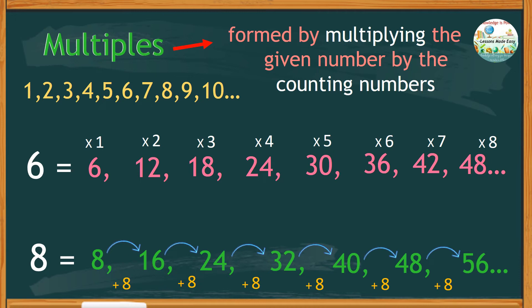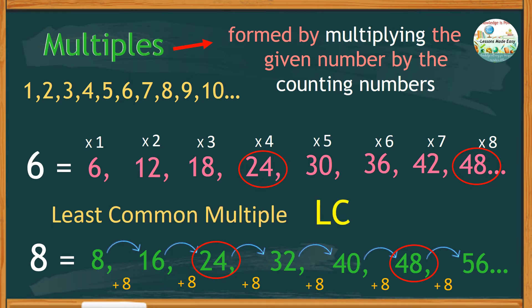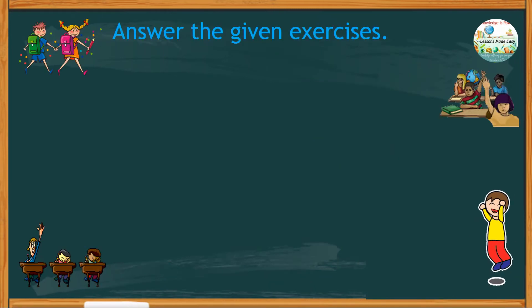Let's check the common multiples of 6 and 8. 24 is common for both 6 and 8, and 48 is also a common multiple. But when we talk of the least common multiple, or LCM, we're looking for the smallest number. In this case, the least common multiple of 6 and 8 is 24.